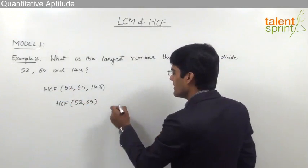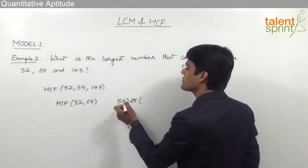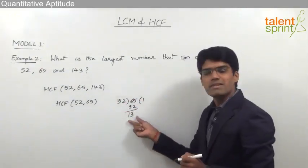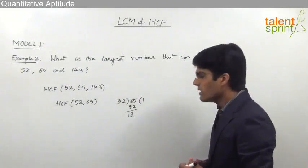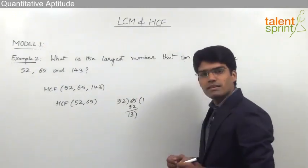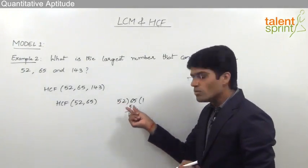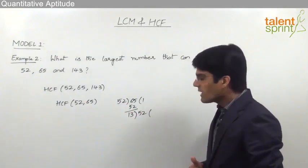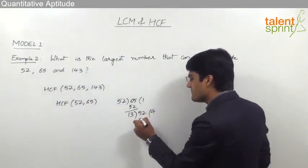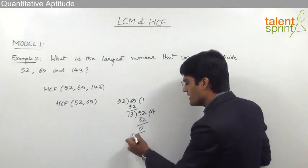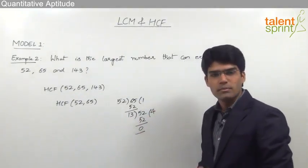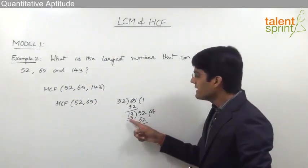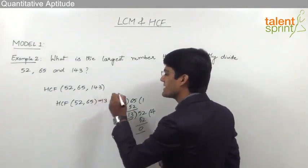Using the division method, 65 is divided by 52. 52 × 1 = 52, so the remainder is 13. Since the remainder is not 0, the division continues. Now 13 becomes the divisor and 52 becomes the dividend. We know 13 × 4 = 52 exactly, so the remainder is 0. Since the remainder is 0, the process stops, and the last divisor is 13. So 13 is the HCF of 52 and 65.